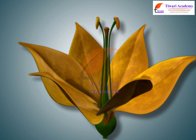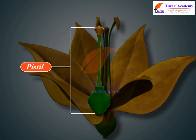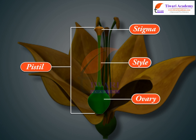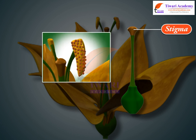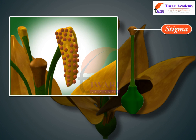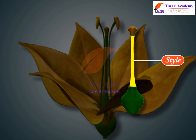The free unit of gynesium is called pistil. A pistil has three parts: stigma, style, and ovary. Stigma is the terminal receptive part of the pistil, which functions as a landing platform for the pollen grains. It also determines the compatibility or incompatibility of the pollen grains. Style is an elongated, narrow stalk that connects the ovary with the stigma.